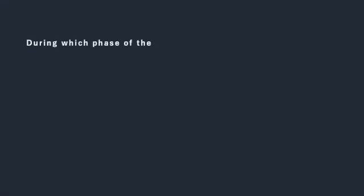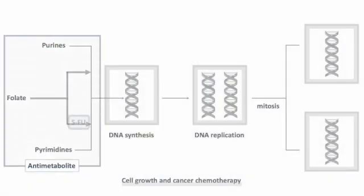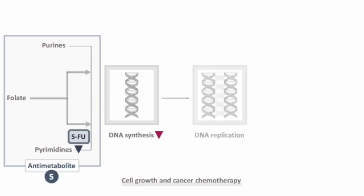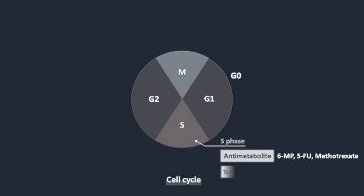During which phase of the cell cycle does 5-FU function? 5-FU is an analog of the pyrimidine uracil. It blocks DNA synthesis. 5-FU functions during the S phase of the cell cycle.